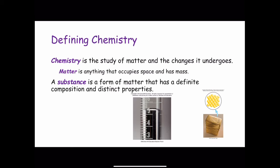Chemists distinguish among several subcategories of matter based on composition and properties. The classifications of matter include substances, mixtures, elements, and compounds, as well as atoms and molecules, which we're going to take a look at in chapter 2.